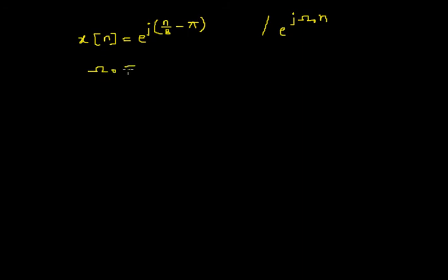So by comparing these two signals I would get omega 0 is equal to 1 by 8. And I already know that for a discrete time signal to be periodic its angular frequency must be a rational multiple of 2 pi.